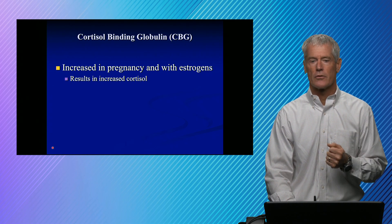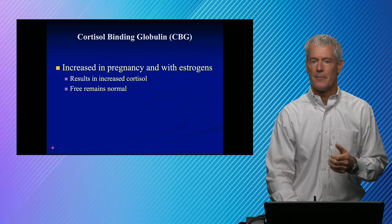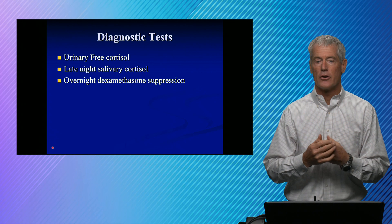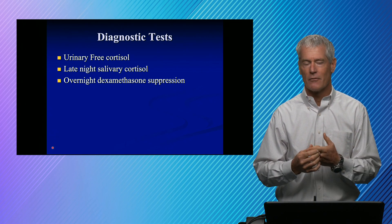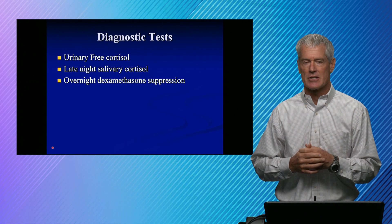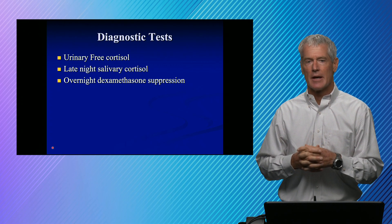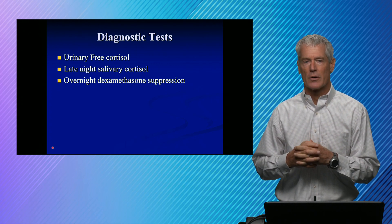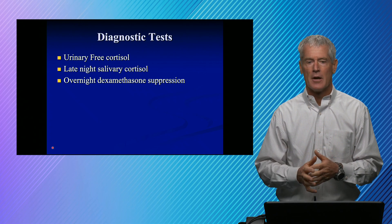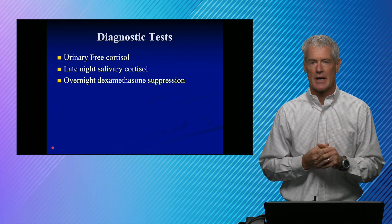With elevated CBG, total cortisol increases, but free cortisol typically remains normal. You can do other tests to figure out what's happening with the free cortisol when you have an elevation of total cortisol. Those tests are urinary free cortisol and late-night salivary cortisol — salivary cortisol is an indication of free cortisol since it's secreted into the oral cavity as the free hormone. There's also an overnight dexamethasone suppression test, and I have four or five slides on dexamethasone suppression tests we'll go through.